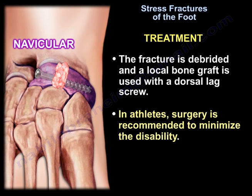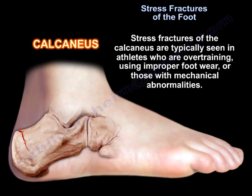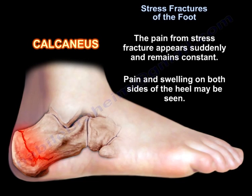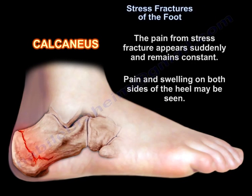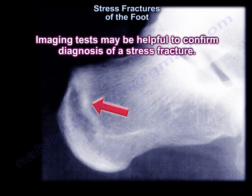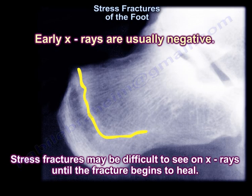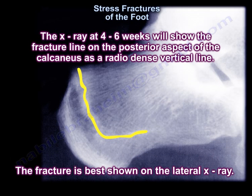In athletes, surgery is recommended to minimize disability. Stress fractures of the calcaneus are typically seen in athletes who are overtraining, using improper footwear, or those with mechanical abnormalities. The pain appears suddenly and remains constant. Pain and swelling on both sides of the heel may be seen. Early x-rays are usually negative; stress fractures may be difficult to see until the fracture begins to heal. At 4 to 6 weeks, the x-ray will show the fracture line on the posterior aspect of the calcaneus as a radio-dense vertical line.